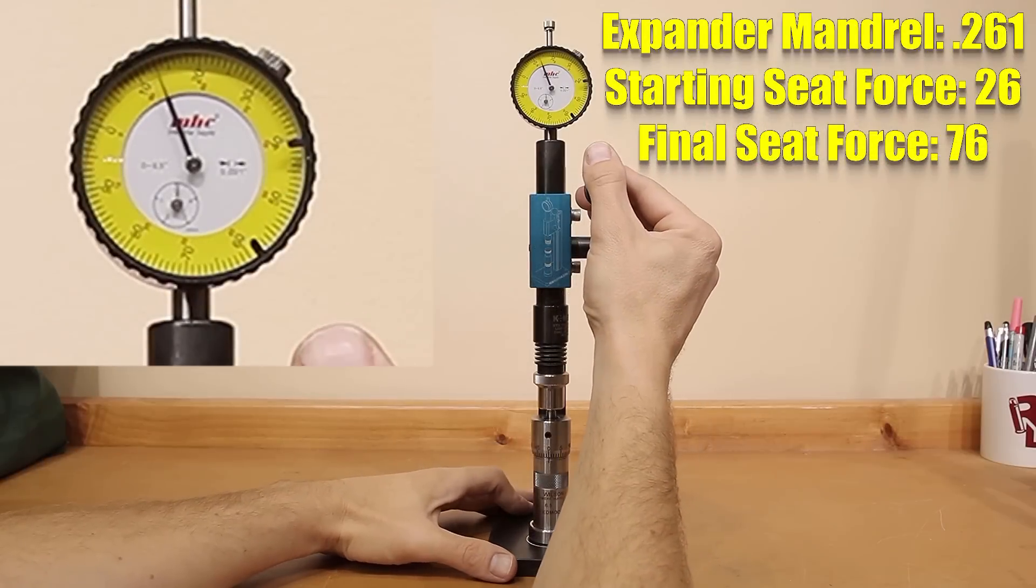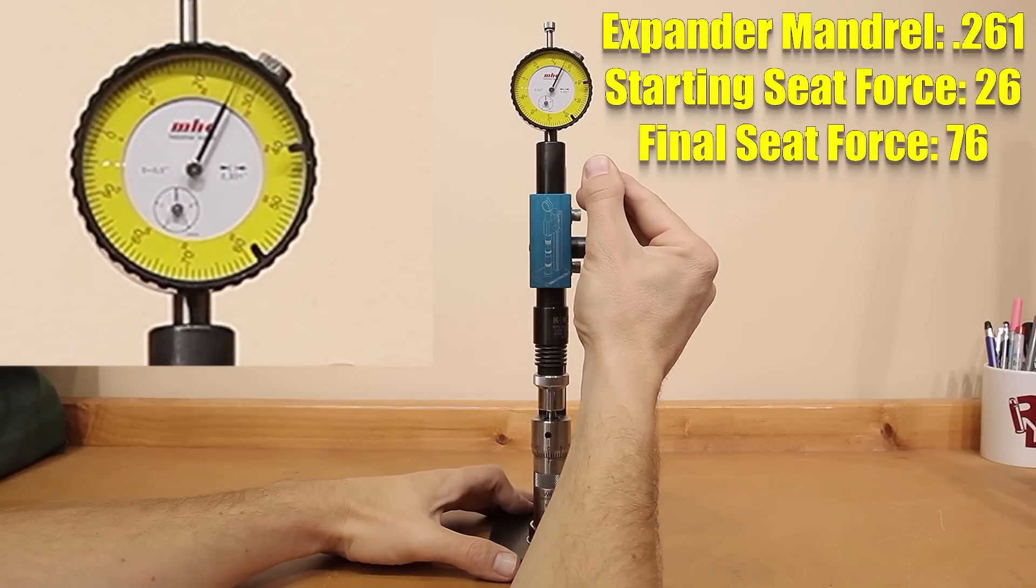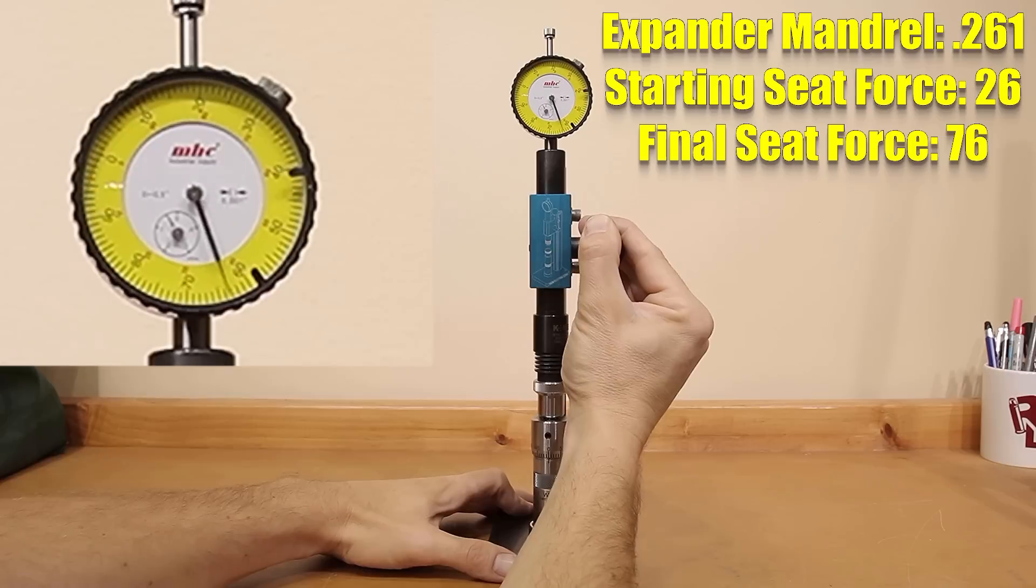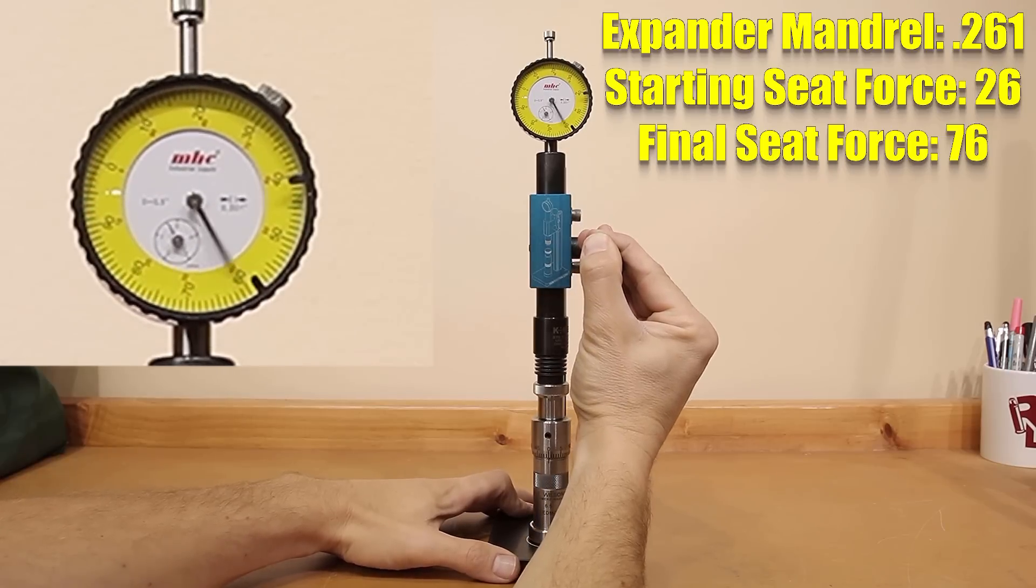As we start off with our 0.261 mandrel, the seating force is going to start around 26 pounds, and our final force to actually seat our projectile is going to end up about 76 pounds.